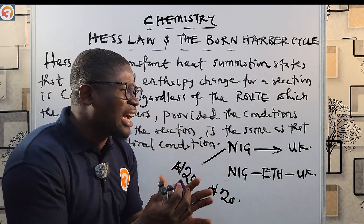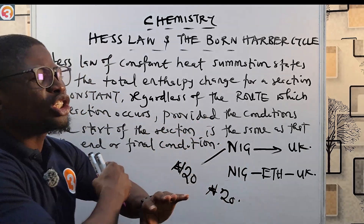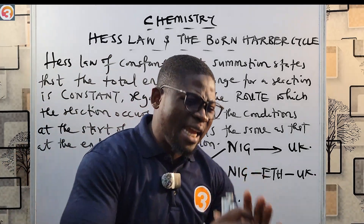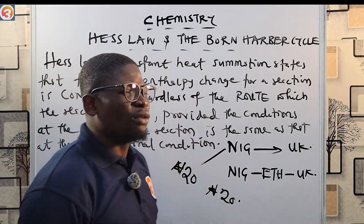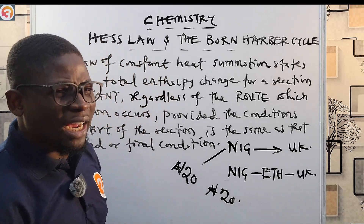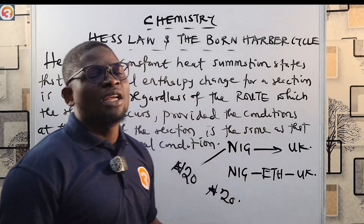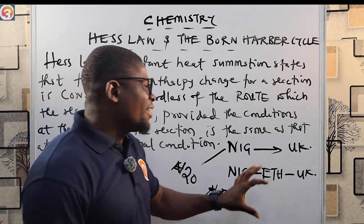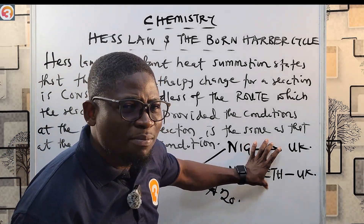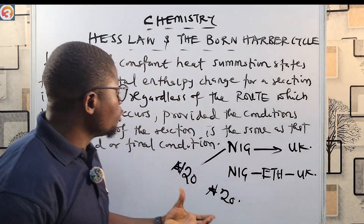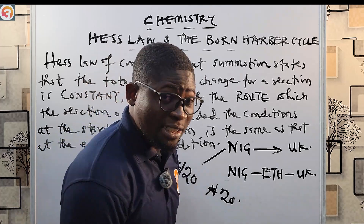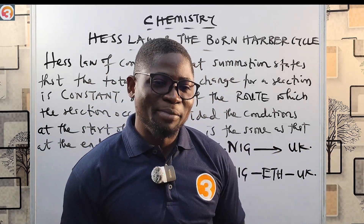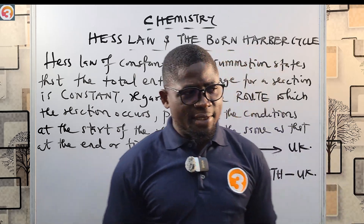That is what Hess's Law is explaining: the total enthalpy change for a reaction is constant regardless of the route the reaction takes, provided the conditions at the start of the reaction are the same as those at the end. So irrespective of the route this man decides to take to UK, he is going to pay 20 naira — that is what it's supposed to be.